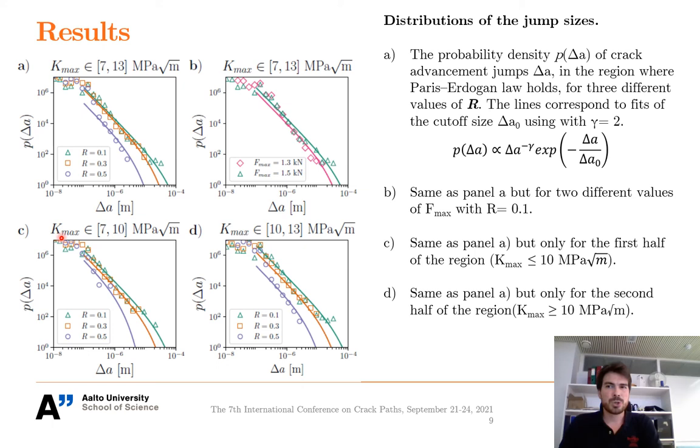Now we can take a crackling noise approach to the crack advancement jumps, by taking the aforementioned region where the Paris-Erdogan law holds, and observing the probability density of delta A in this region. We see that the distributions follow a power law, and there is also a cutoff at high values of delta A, so the full probability density can be written using this equation, where delta A0 indicates the cutoff scale.